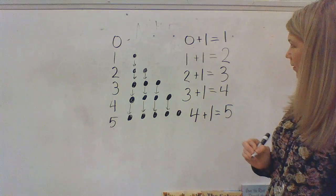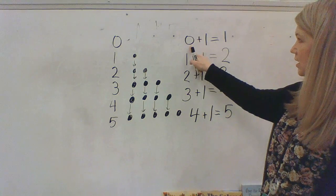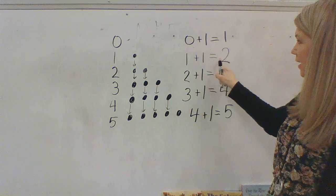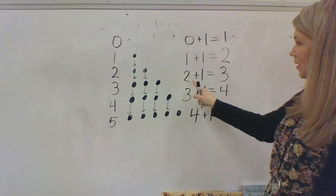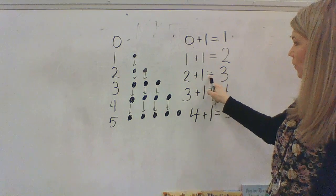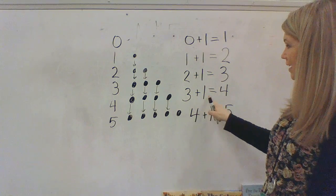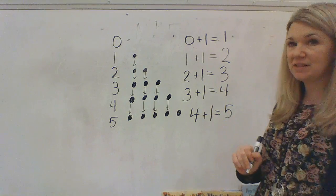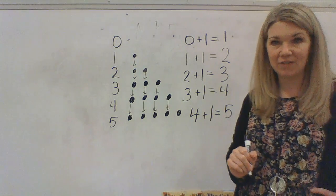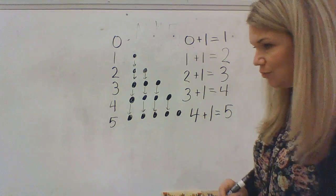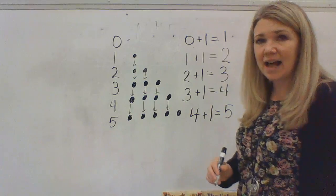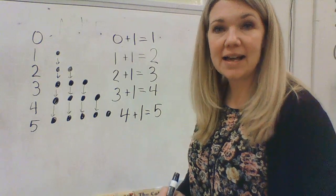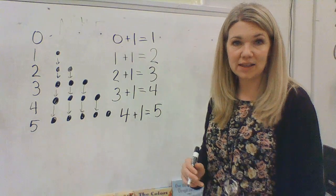Yes. There we go. So zero plus one equals one. One plus one equals two. Two plus one is three. Three plus one equals four. And four plus one equals five. That is really fun. Now, kindergartners, I used some different math signs as I was doing this.